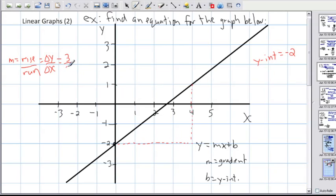So I could say in this case my slope is going to be 3 over 4. That'll be my answer here. That'll be my gradient, 3 fourths.